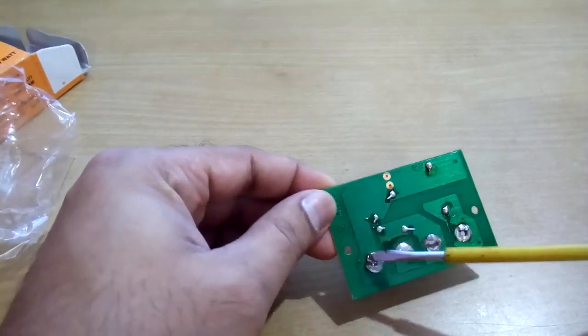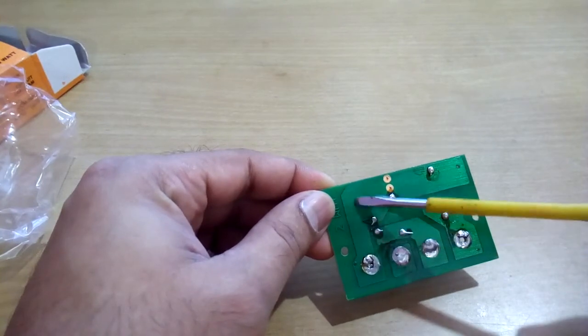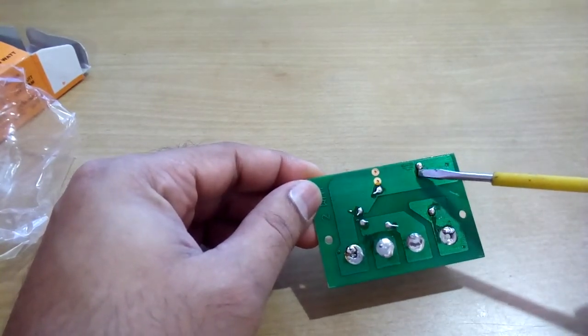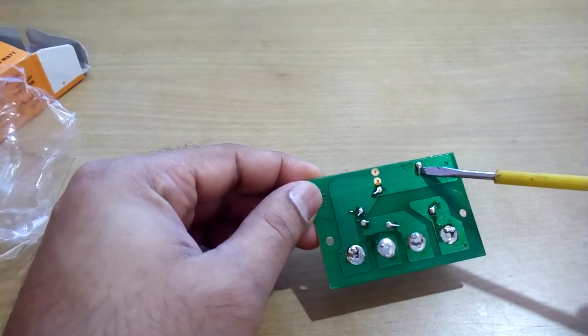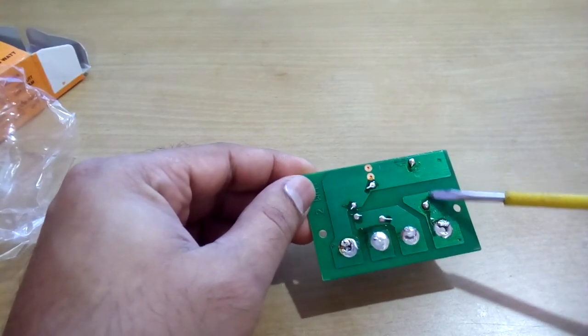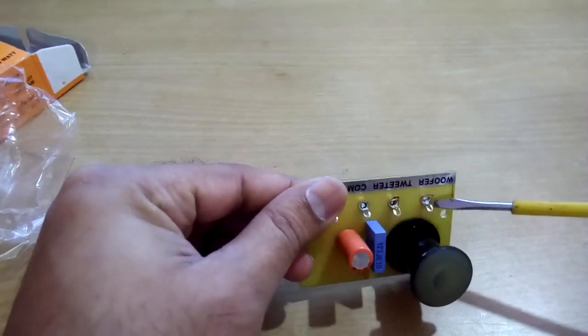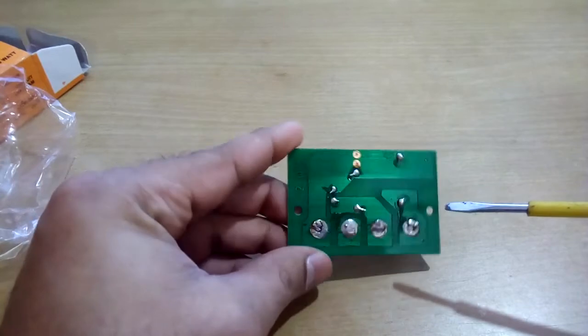So here are the input connections. You can see the input connection goes through here, and this is one side of the choke coil, and this is the other side of the choke coil. Then the output goes to the woofer.